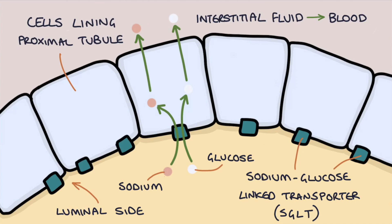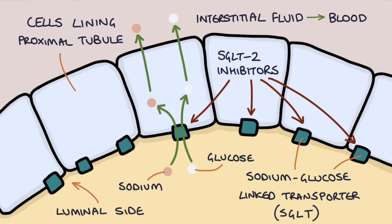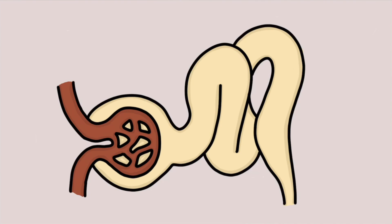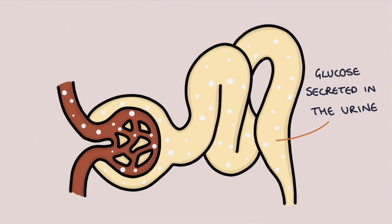This sodium-glucose linked transporter is the target of SGLT2 inhibitors such as dapagliflozin. As the name suggests, they inhibit the action of the SGLT2 molecule and prevent the glucose that has filtered out of the blood in the glomerulus from being reabsorbed. As a result, the glucose is secreted into the urine and blood glucose stays low because it's not being reabsorbed in the proximal tubule — this is how they reduce blood sugar.